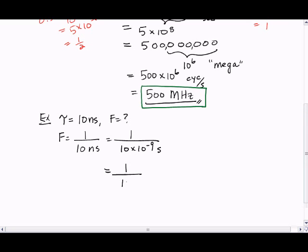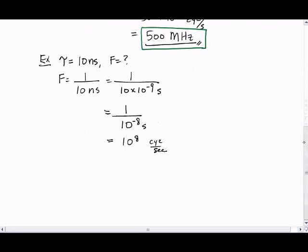So using the law of exponents, I'm going to simplify this to be 10 to the minus 8 seconds down in the denominator. So by multiplying the top and bottom by 10 to the 8, we have 10 to the 8 cycles per second. And if you expand this, you will have 1 followed by 8 zeros: 1, 2, 3, 4, 5, 6, 7, 8.